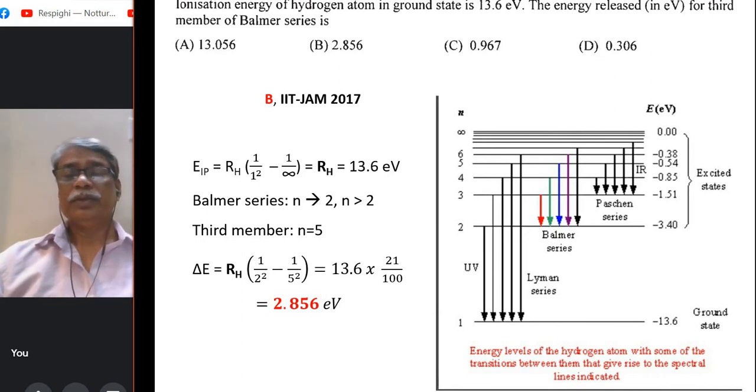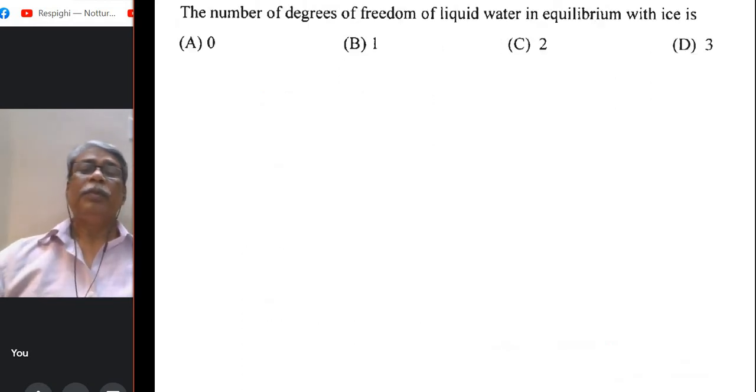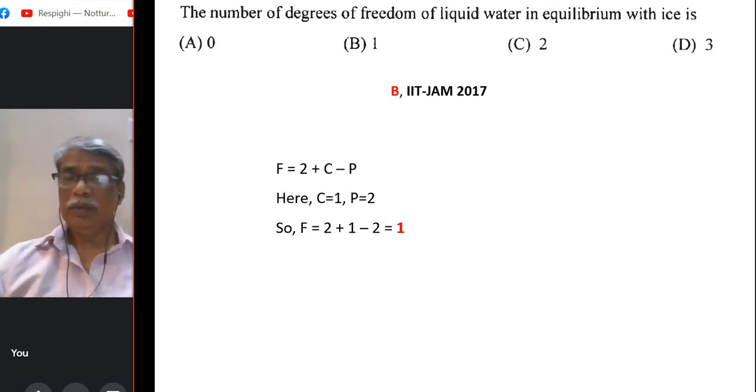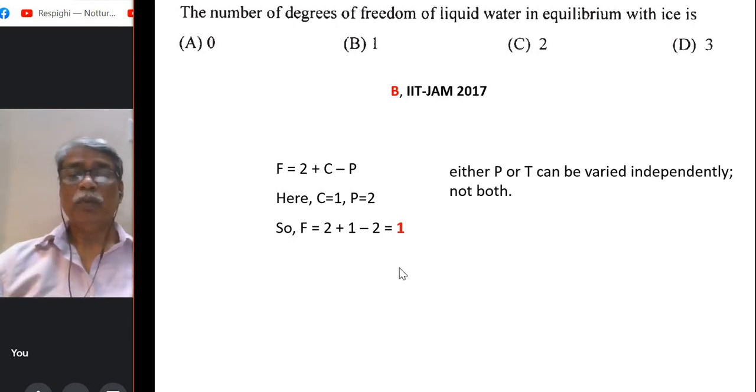The number of degrees of freedom of liquid water in equilibrium with ice. Solid ice and liquid water they are in equilibrium. So clearly the component is simply 1, the water itself, but the phases are 2 and the formula is 2 + C - P = F degrees of freedom. So C is 1, P is 2, and you get degrees of freedom is 1. Now physically what does it mean? That means at best you can play with only one variable and what variables you have at hand, pressure and temperature for equilibrium. So if you change P then T would be automatically adjusted and if you change T then P would be automatically adjusted. So that is the meaning of degrees of freedom equals 1.